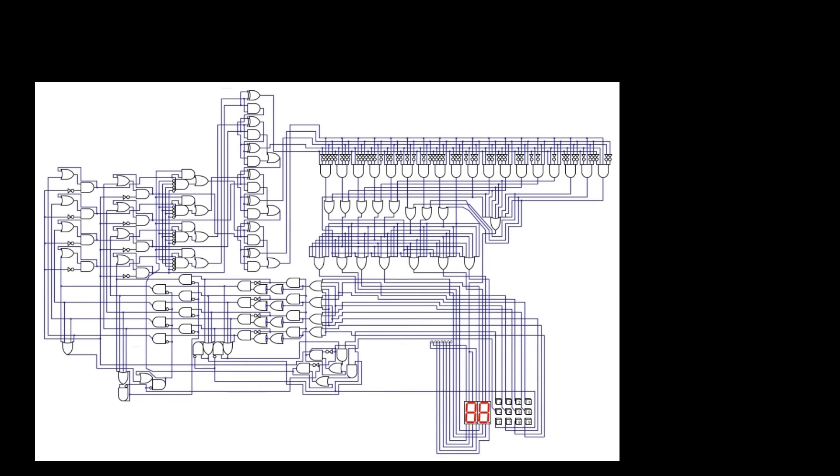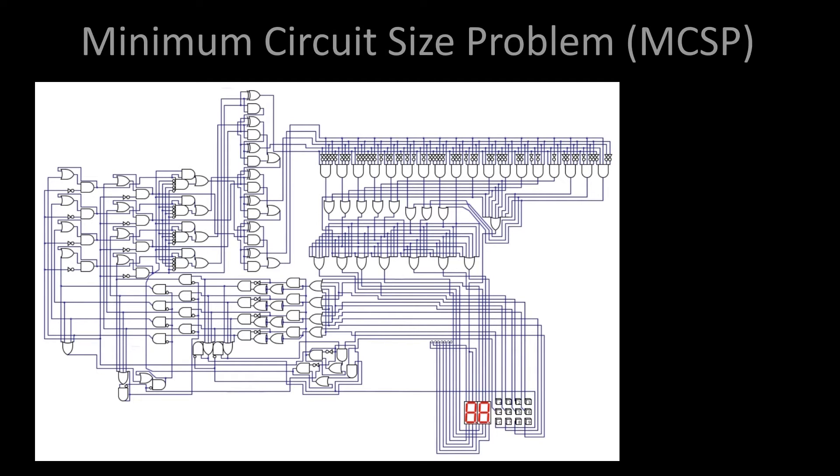Let's now ask a more practical question, important for efficient digital circuit design. Given some boolean function, such as the one implemented by this complicated circuit, and some number k, find a circuit using at most k logical gates implementing this functionality. This is known as MCSP, or the minimum size circuit problem.